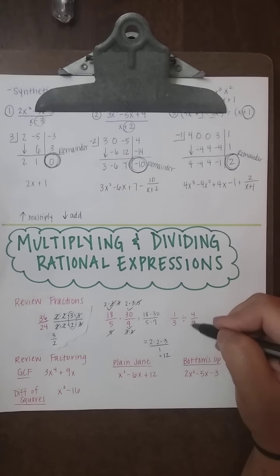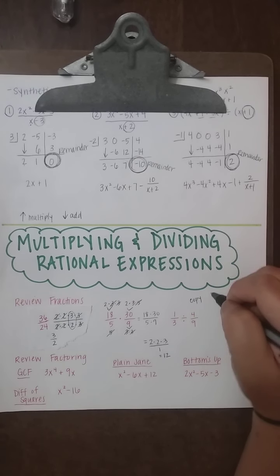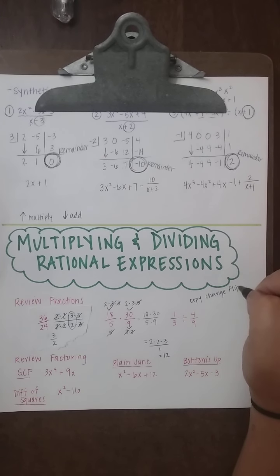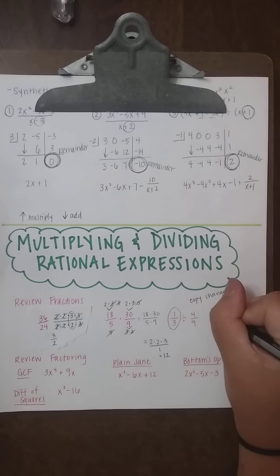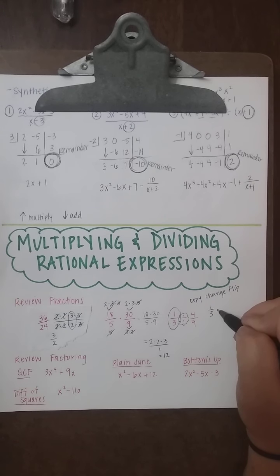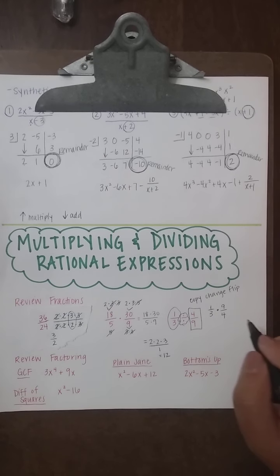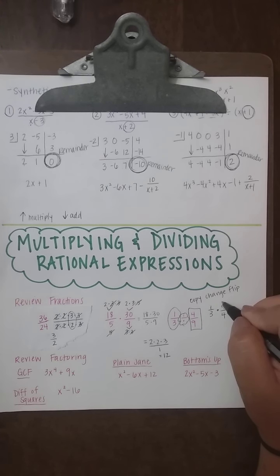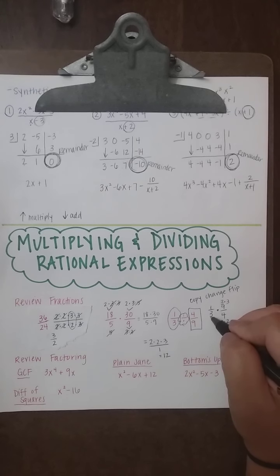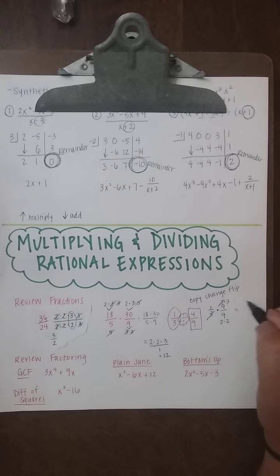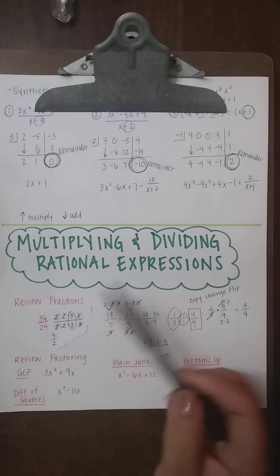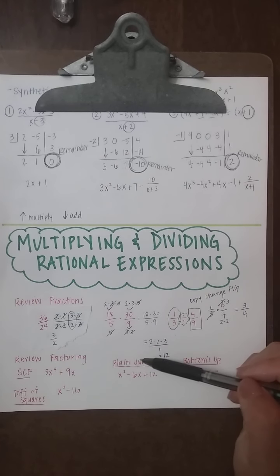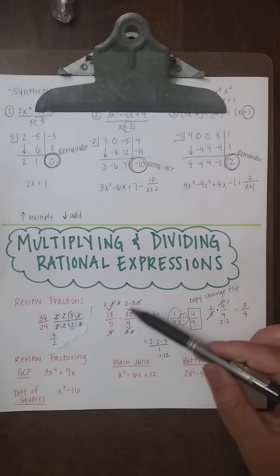For division of fractions, we do copy-change-flip. Copy the first fraction, change the division to multiplication, and flip the second fraction. Then factor and cancel just like with multiplication. For example, dividing gives us 1/3 ÷ 4/9, which becomes 1/3 × 9/4. The 3s cancel, leaving 3 fourths.